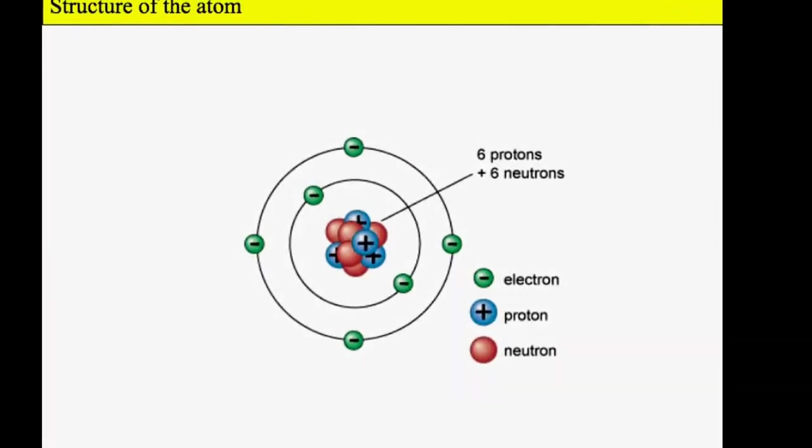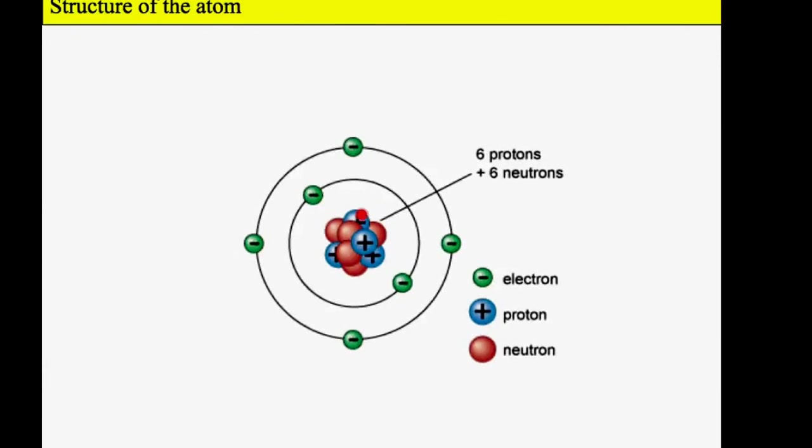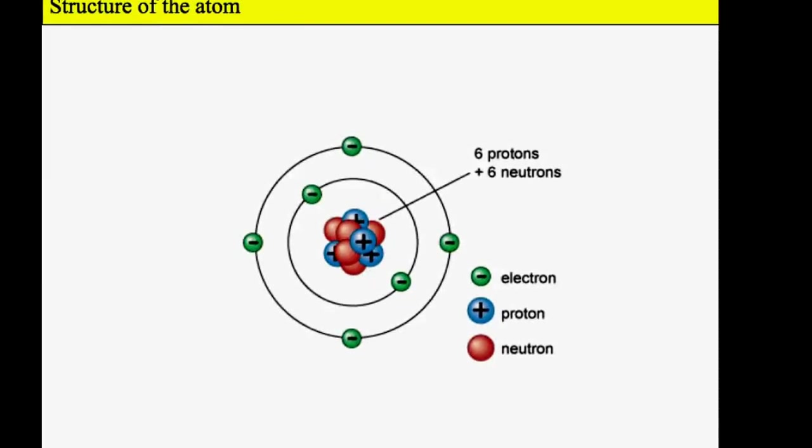Here is a diagram showing the basic structure of an atom. You've got the nucleus in the centre, that's where the protons and the neutrons can be found, and around in shells we have the electrons. The electrons have a negative charge, the protons have a positive charge, and the neutrons have a neutral charge.